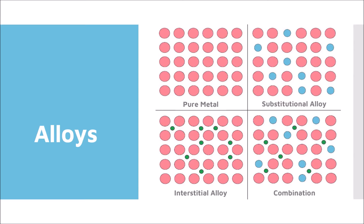Bronze is an example of a substitutional alloy. Bronze is made up of mostly copper atoms with tin atoms substituting some of those coppers. This will change many of the physical properties of the substance — copper and bronze will have different colors, different hardnesses, and they will differ in the way that they bend. An alloy has different properties than the pure metal that it originated from.